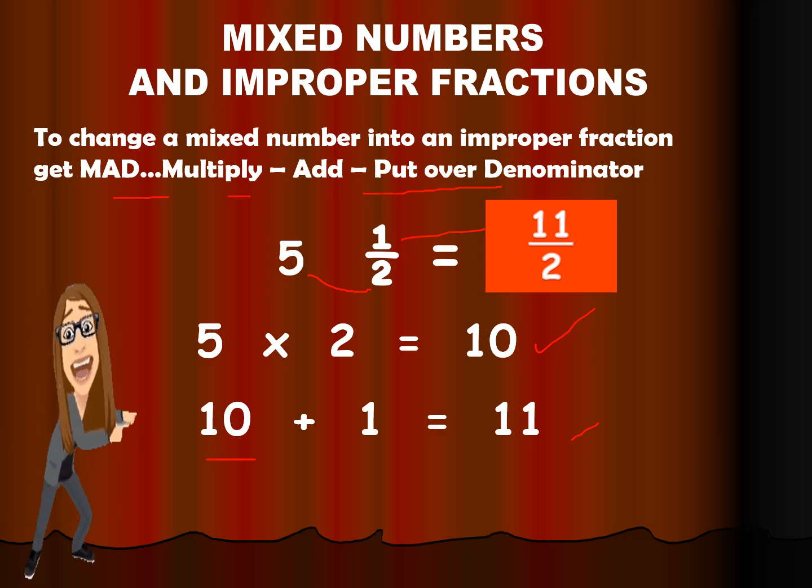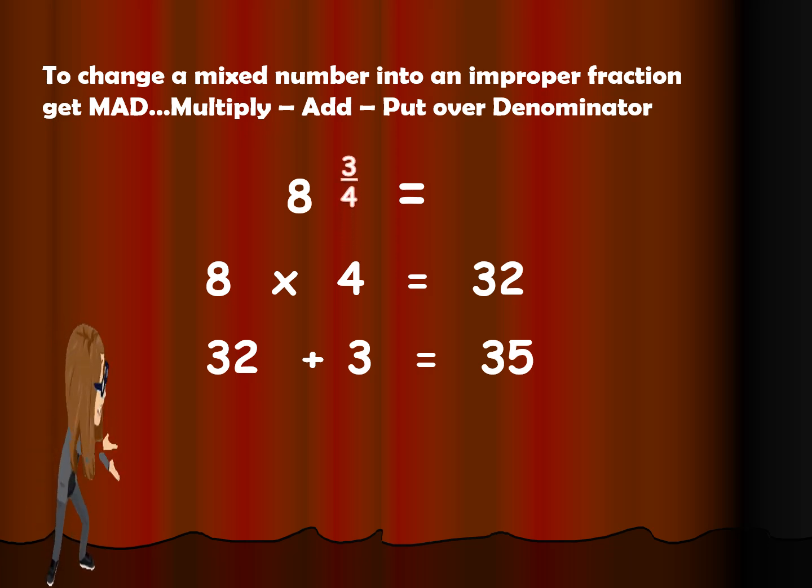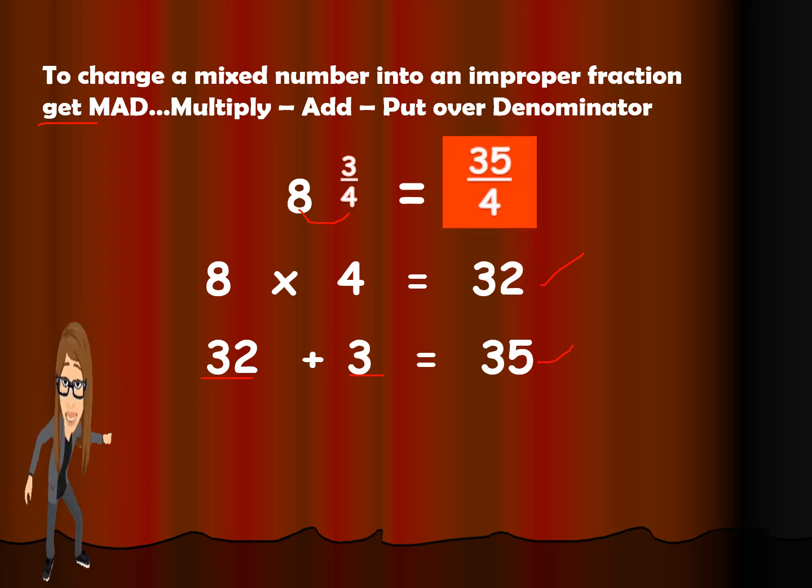Let's proceed. Another example is 8 and 3 fourths. So let's apply again, MAD. Multiply the whole number with the denominator. So 8 times 4 is 32. Then add 32 plus 3 is 35. So the answer is 35 over 4.